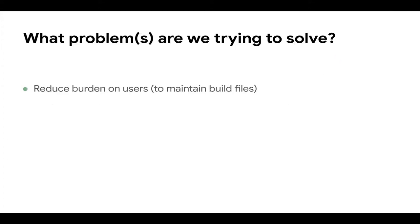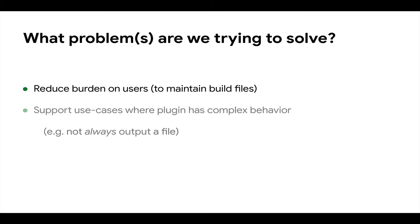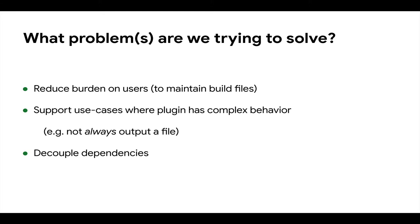The problems we're trying to solve are reducing burden on the users, supporting use cases where the plugins have some of these more complex behaviors, and decoupling dependencies. By that I mean the providing rule set — in this case, stack B rules proto — whatever versions of protobuf or gRPC should not dictate what the dependency of protobuf or gRPC is used inside the monorepo. We want those things to move independently, and using a Gazelle approach allows us to do that.